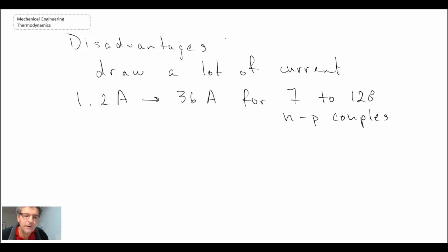The current draw is anywhere from 1.2 amps up to 36 amps for 7 to 128 N-P couples. That's a lot of current. When you consider a typical household circuit, for example, we'll source at least in North America on average about 15 amps. That's a heck of a lot of current that we have to flow through these. That's why for your car, the alternator can generate that kind of current, although it does put more load on the engine and does consume more fuel. However, the disadvantage would be the amount of current required.